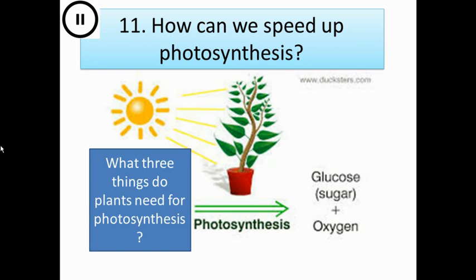So we've talked about photosynthesis a lot, including the equation for it. What I want you to do is just in your heads — you don't have to write it down, save the writing for the written phase at the end. What three things do plants need for photosynthesis? You can pause this slide, think about those, and then we'll go through the answers. Pause the slide now.